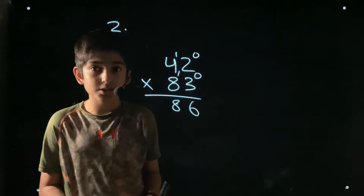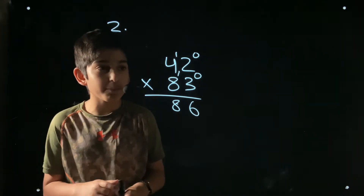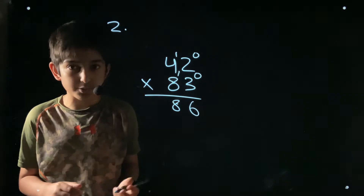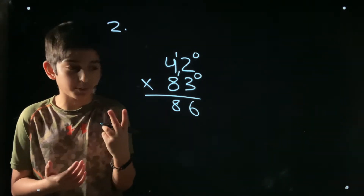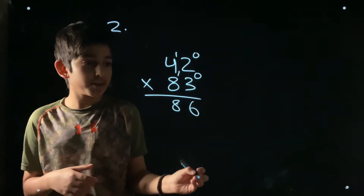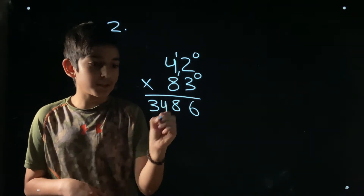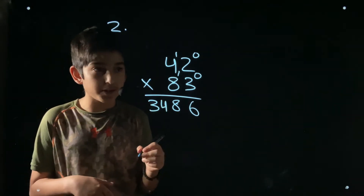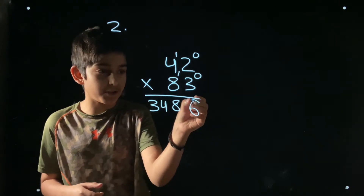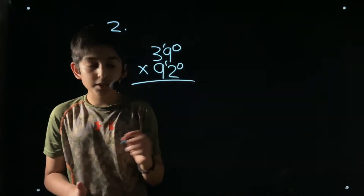Since we have a carry of 2, now do position two: 8 times 4 equals 32, plus the carry of 2 is 34. There are no more numbers on the other side, so 34 goes in front. The answer to 42 times 83 is 3486.